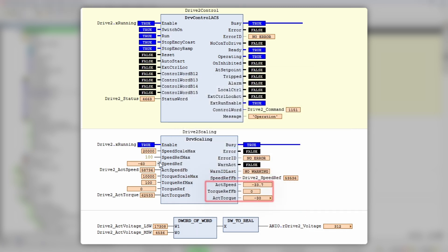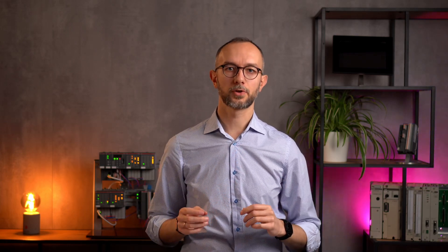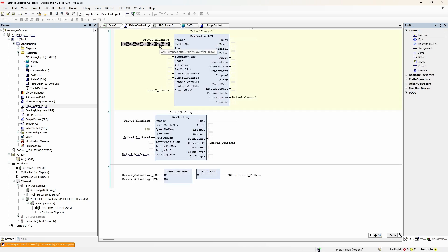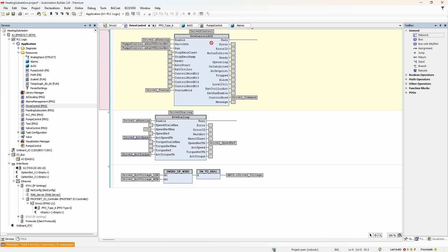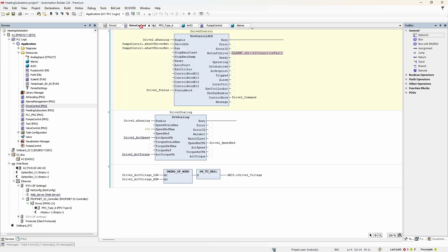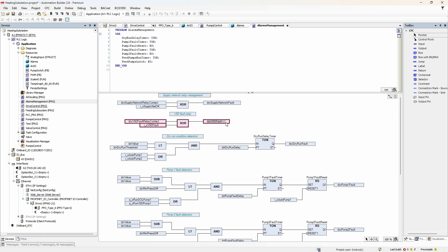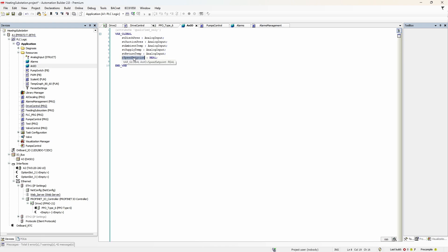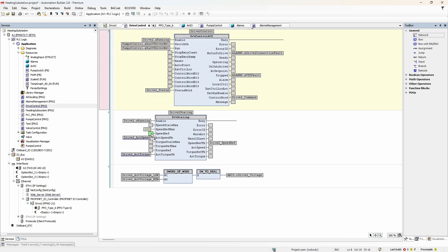What is left for us to do is to integrate the new drive control method into the existing application. In pumps control program, change discrete output to local variable, then connect that variable to switch on and run inputs. Create and link additional drive communication fault variable. Link existing drive fault variable to the output tripped and remove VSD fault relay code from alarms management program. Connect speed set point variable to the respective input of the scaling function block. Write scaled values of speed and torque to newly created global variables.